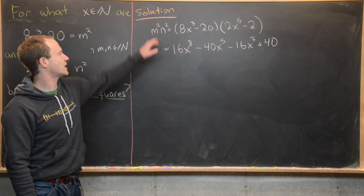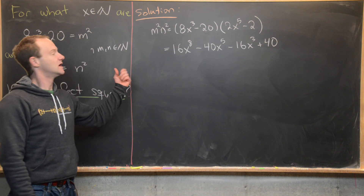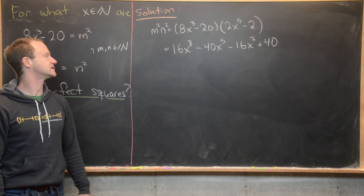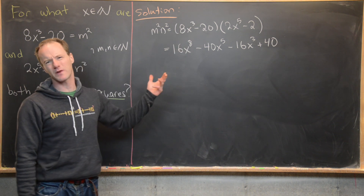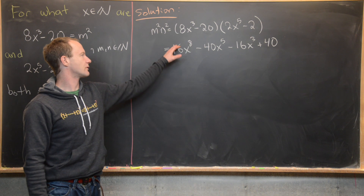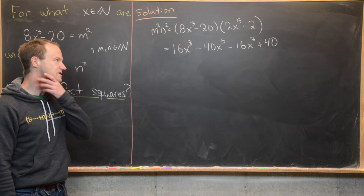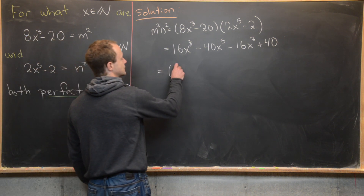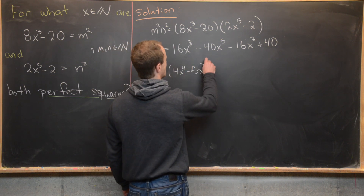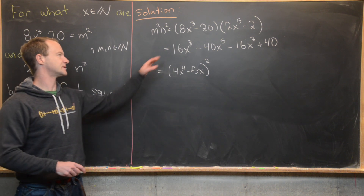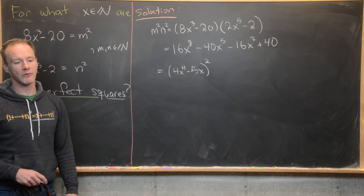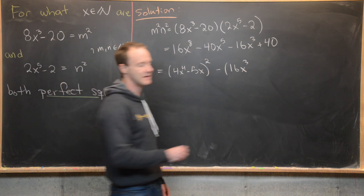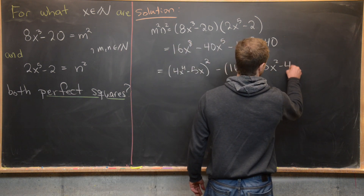Now comes a really tricky step. We want to express m²n² as a perfect square plus or minus some correction term, then the next perfect square plus or minus something. The leading term has square root 4x⁴, so playing around with it, we land on: m²n² = (4x⁴ − 5x)² minus 16x³ plus 25x² minus 40. Call that correction term f(x).